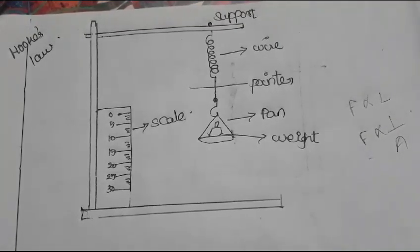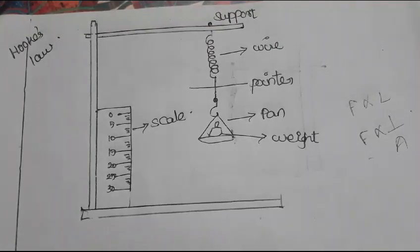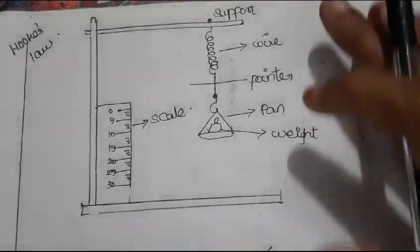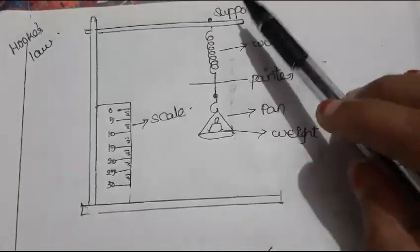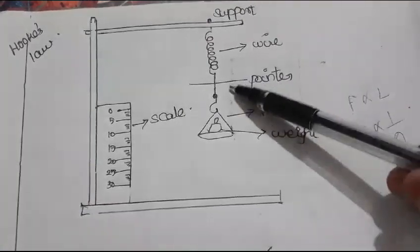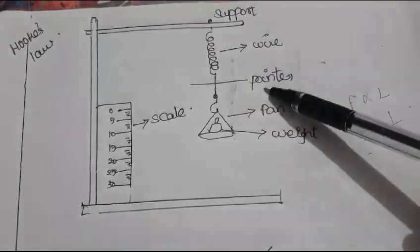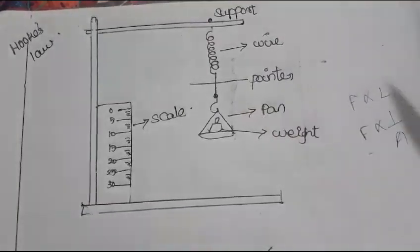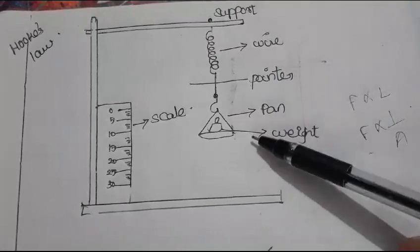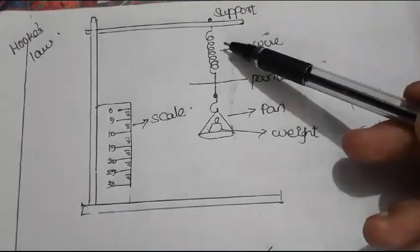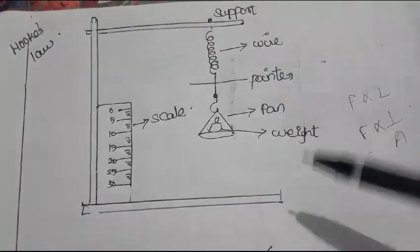A graph is plotted using F on the x-axis and del L on the y-axis. In the experimental setup, there is a fixed support at the top and the free end of the wire at the bottom with a pointer. When a load is added, the wire stretches, giving extension del L.